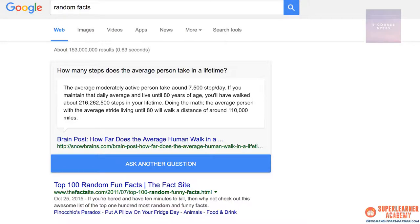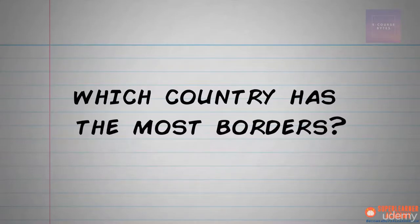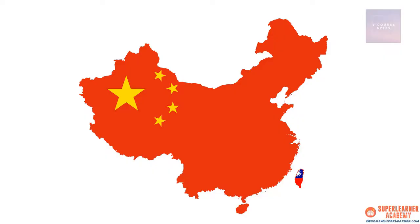We've used Google's random fact generator to stir up some interesting tidbits of information. If you ever want to practice learning random stuff, I highly recommend trying out this awesome tool. So, have you ever wondered which country has the most borders? It turns out it's China, with 14 bordering countries. Here are some different ways I could remember this.